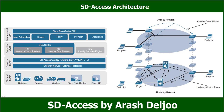The overlay network is a virtual tunnel network that virtually interconnects all network devices, forming a fabric of interconnected nodes. It abstracts the inherent complexities and limitations of the underlay network. In an overlay, you see only the edge nodes and tunnels between them — the underlay detail is hidden. The underlay network for SD Access should be configured to ensure performance, scalability, and high availability.